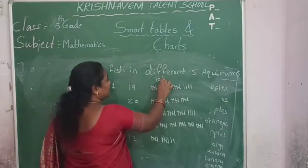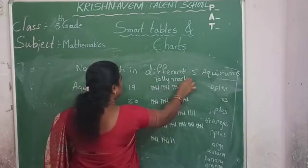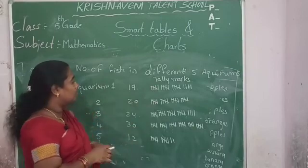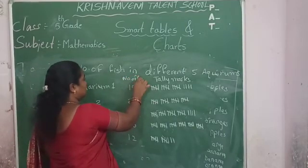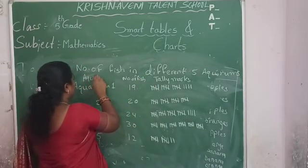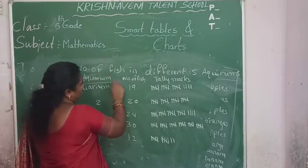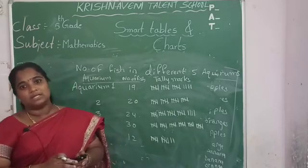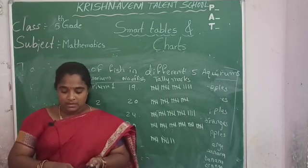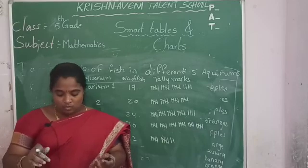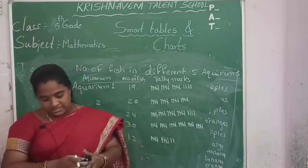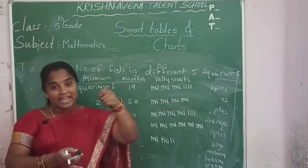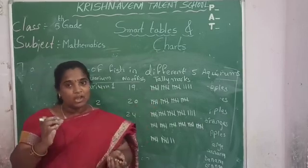Now this is how the given data can be represented in tabular form using tally marks — showing the number of fish and the name of the aquarium. Today our topic is about tally marks. Tally marks are a quick way to show the data using groups of 5. One vertical line is made for each of the first 4 numbers, and the 5th number is drawn across the 4 vertical lines — making one group.